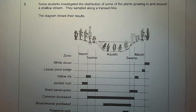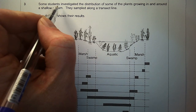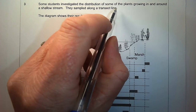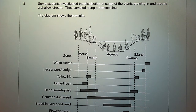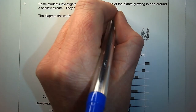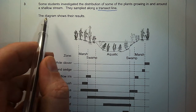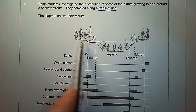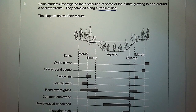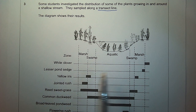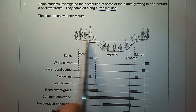This is a GCSE biology question about sampling. Some students investigated the distribution of plants growing in and around a shallow stream. They sampled along a transect line. The diagram shows their results, with the stream going across the screen, the different types of plants listed, and boxes representing the distribution of plants along the stream.